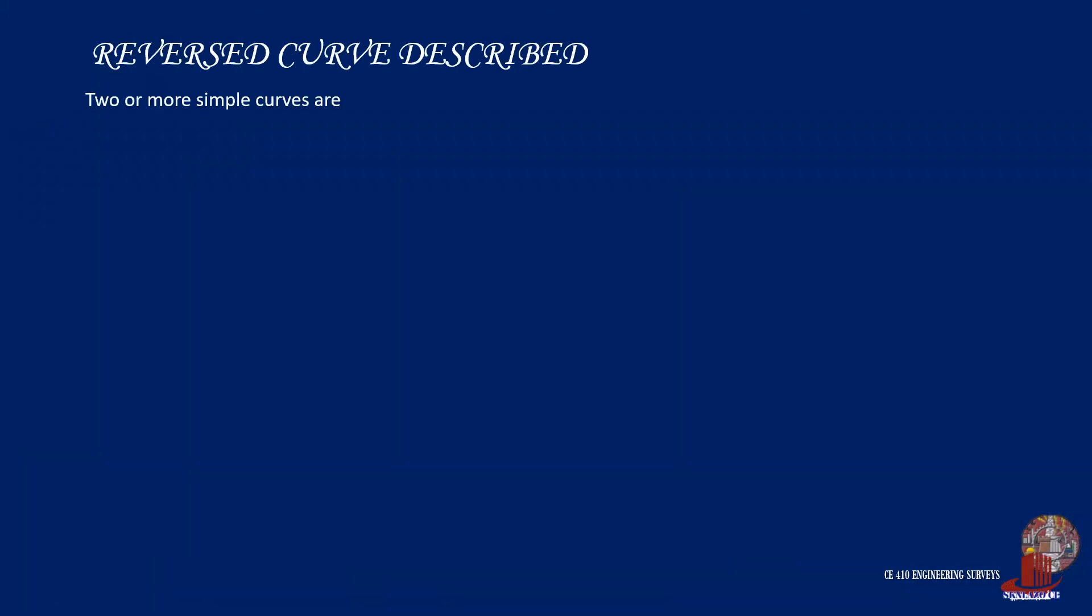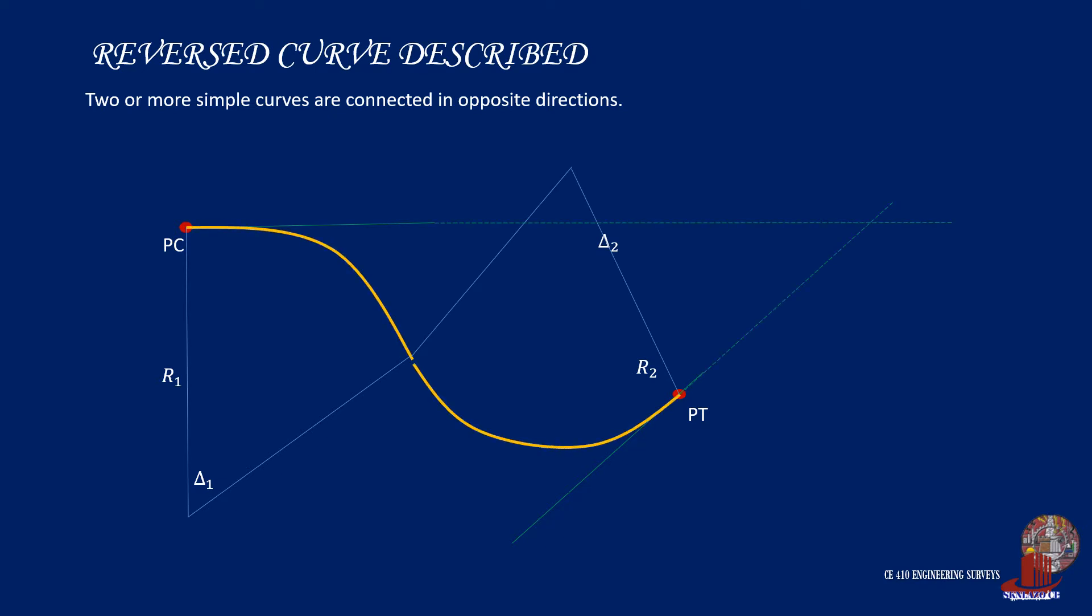A reverse curve is composed of two or more simple curves turning in opposite directions. In other words, two curves are attached to each other and the centers of the curves are on opposite sides of the proposed route of travel. Their points of intersection lie on the opposite sides of a common tangent and the PT of the first curve is coincident with the PC of the second. This point is called the point of reverse curve or PRC. Also, the point of intersection will be involving the back tangent of the first curve with the forward tangent of the second curve.